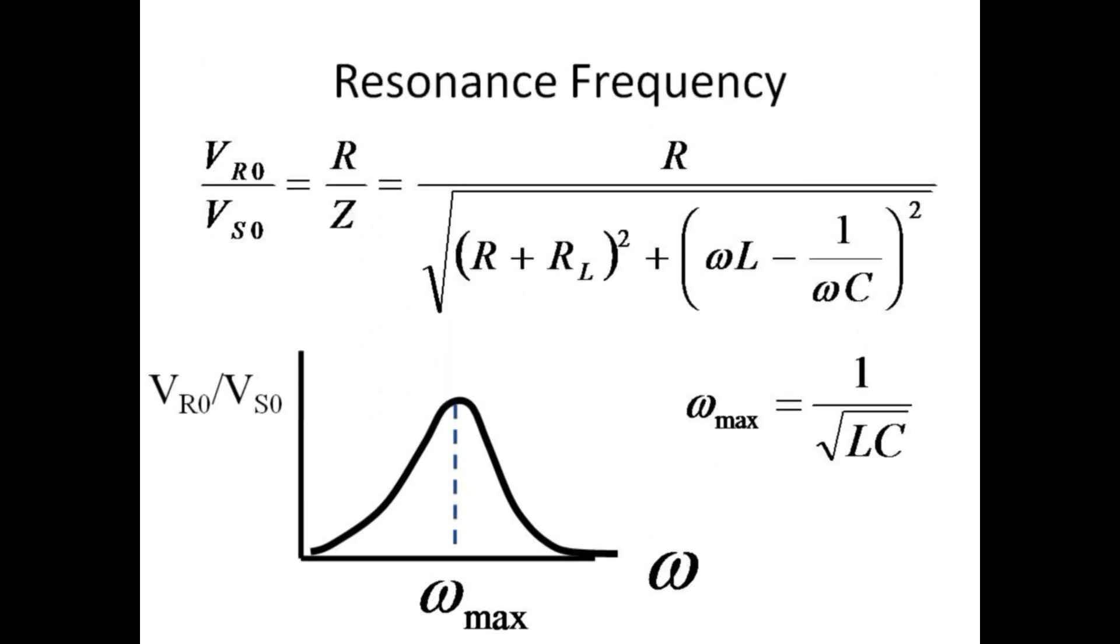The current is proportional to the voltage drop across the resistor. If we examine the ratio of V_R over V_S, we find a function that peaks at a frequency 1 over the square root of LC. This is the so-called resonant frequency of this circuit. It is the frequency at which the current is surging at its maximum.